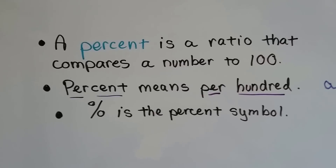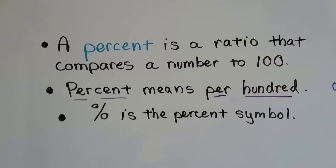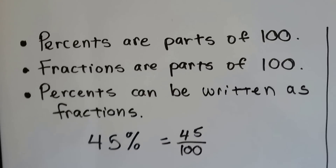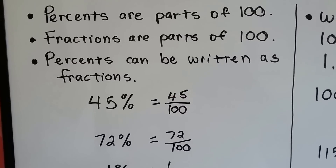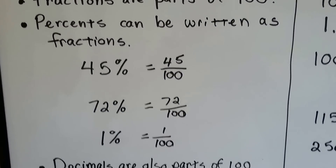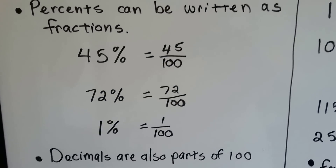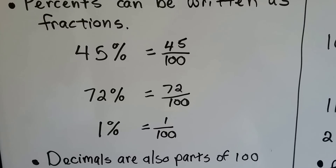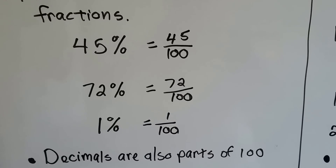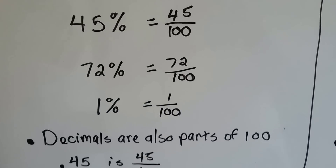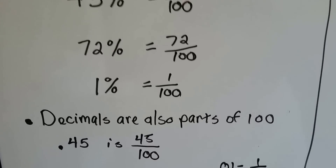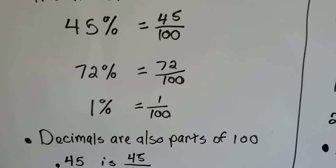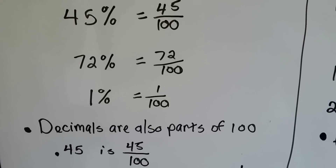The line slash with the two little circles is the percent symbol. It tells us it's parts of 100. Percents are parts of 100, and fractions are parts of 100, so percents can be written as fractions. Forty-five percent is forty-five over 100 — forty-five hundredths. Seventy-two percent is seventy-two hundredths. One percent is one hundredth. Whatever is in front of the percentage sign tells us it's parts of 100.